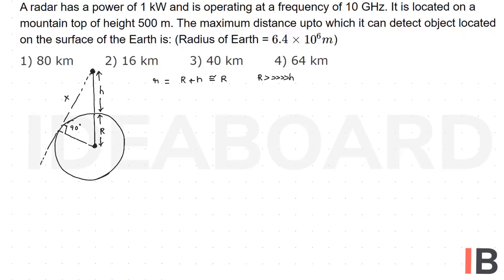Thereby, if we consider the x value, x is the root over R plus H whole square minus R square. So x is equal to the root over H square plus 2RH.